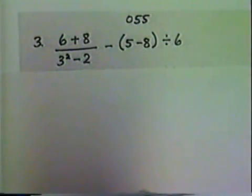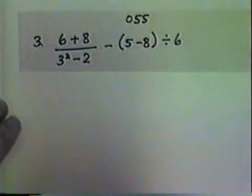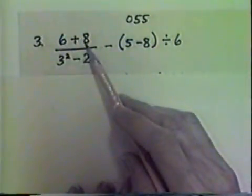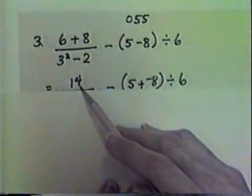Where do we begin? Remember that in the symbols of inclusion, we included the fraction bar. The fraction bar is a symbol of inclusion, and so we must work things above and below the fraction bar as if they were in parentheses. So let's begin with 6 plus 8, which is 14.